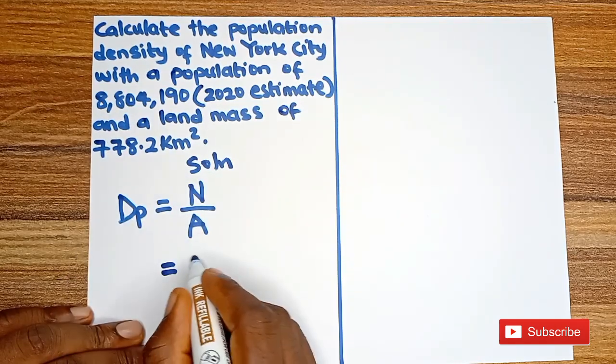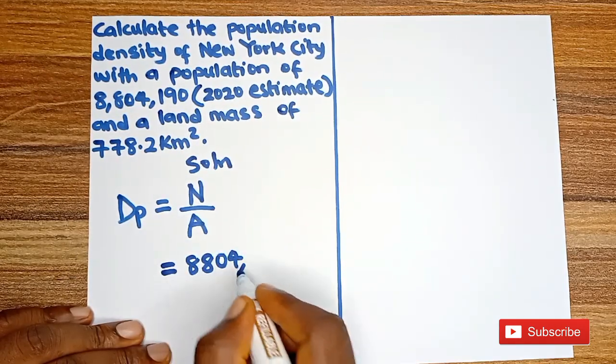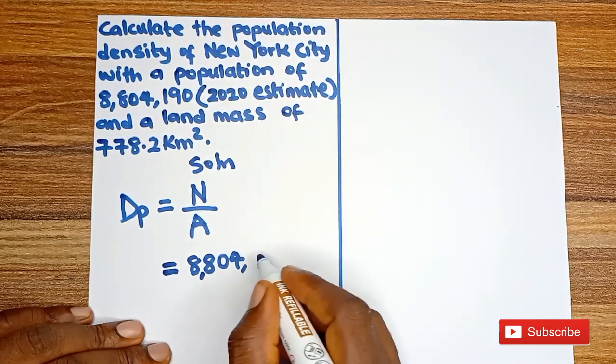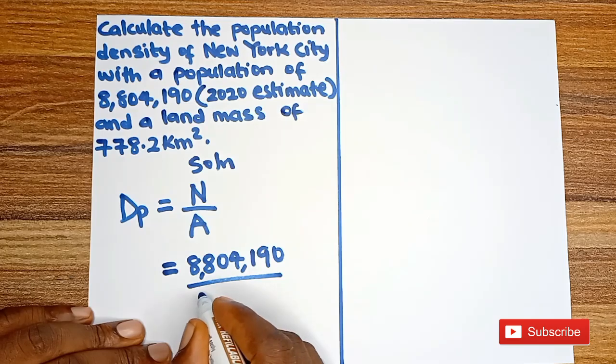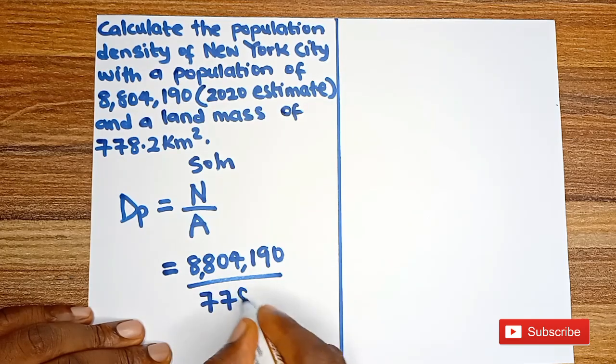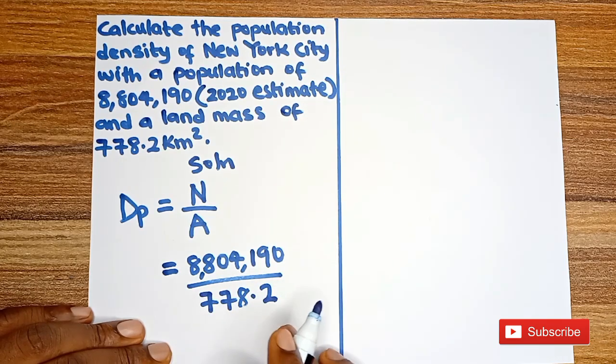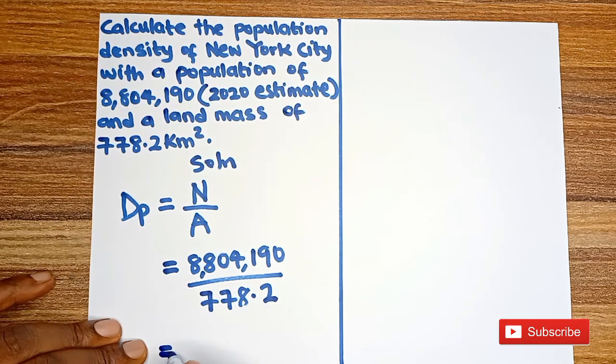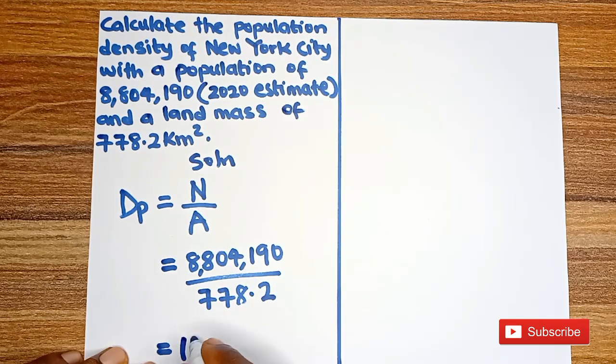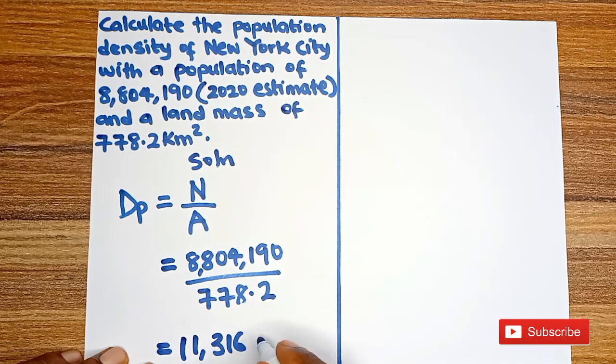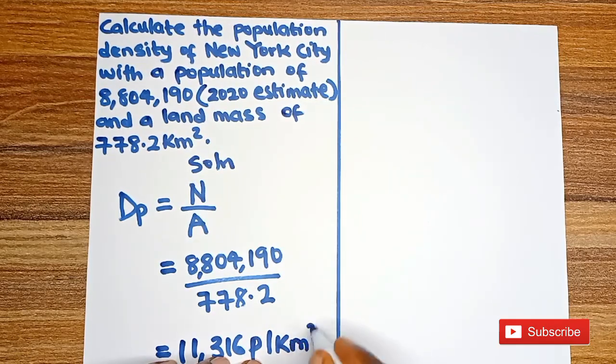So the number of people is 8,804,190 all over the size of the place is 778.2 kilometer square.